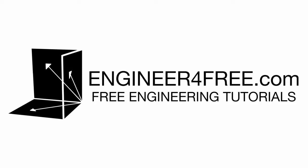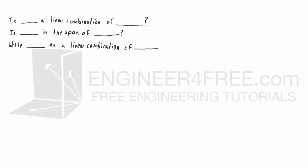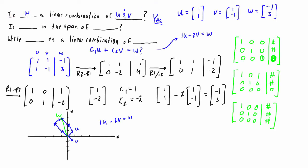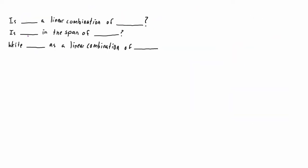Alright guys, welcome back. We are looking at some more stuff on vector combinations and span, and we're still dealing with the same type of problem that we had in the last video. Basically in the last video we looked at this first question: is W a linear combination of U and V? Now hopefully you watched that video — if not just go back and check it. In this video we want to be solving the second question, using a different set of vectors, but I want to show you it's exactly the same process.